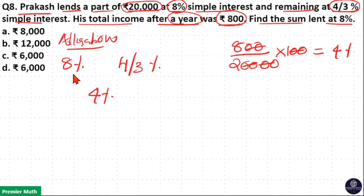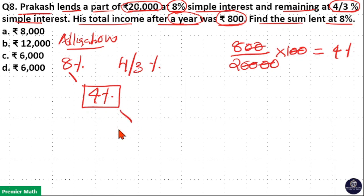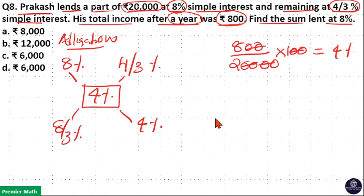You can see that 8% interest and 4/3% interest together constitute this 4%. Now take the differences. The difference between 8 and 4 is 4%. The difference between 4/3 and 4 is 8/3%, that is, 4 minus 4/3 equals 12/3 minus 4/3, which gives 8/3.